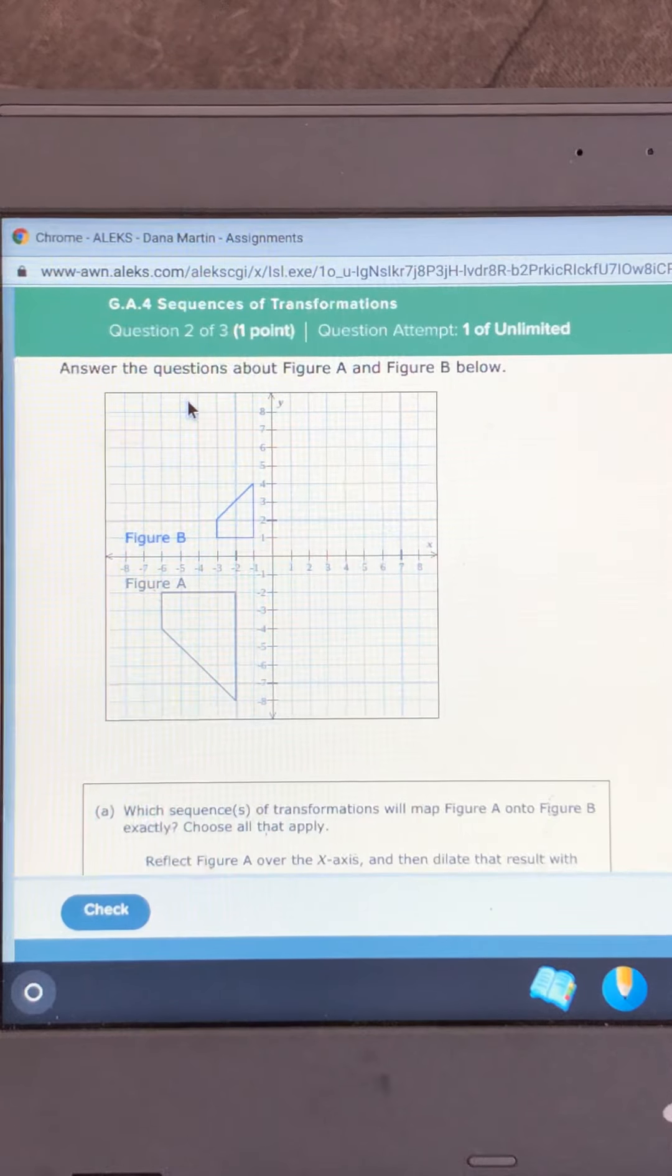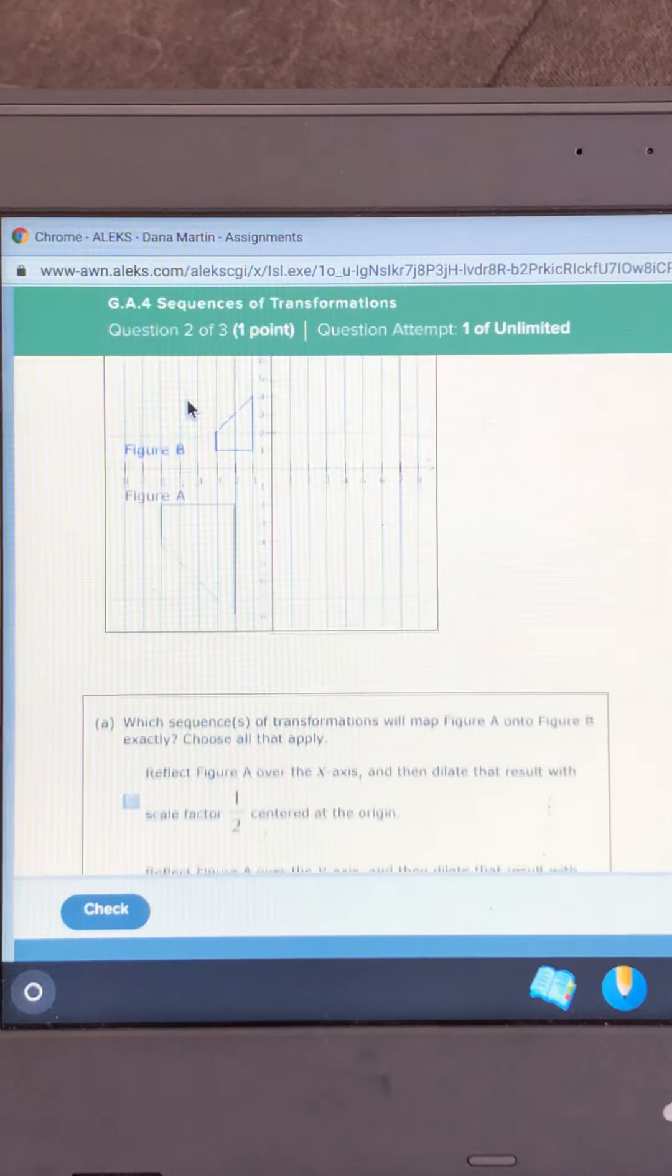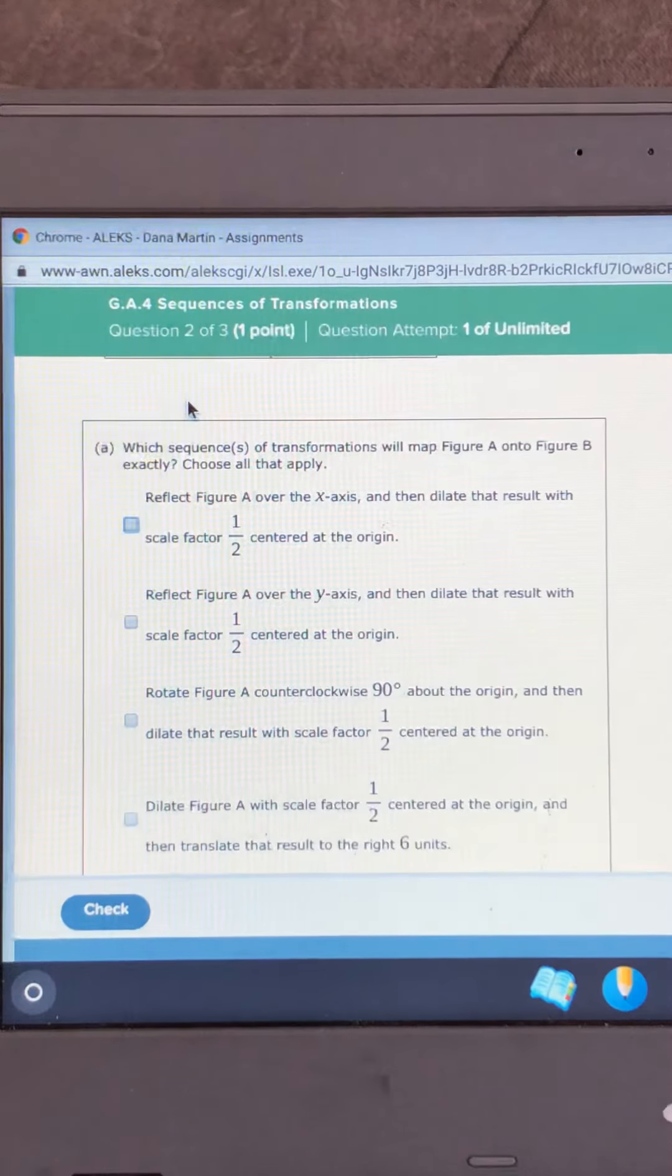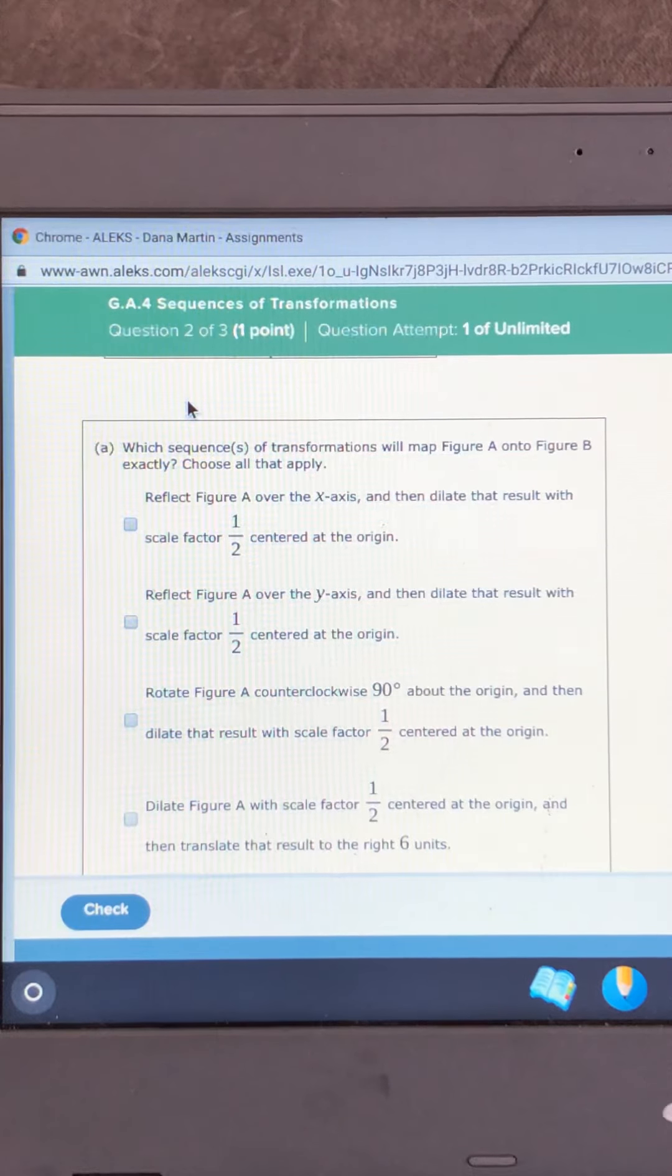So I can look at it and start guessing what the answer is going to be before I look at the possible answers. So they've used one half for the scale factor for all of it. And so it's gonna be one half.